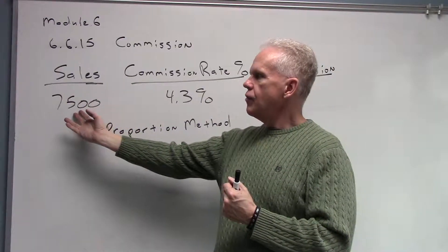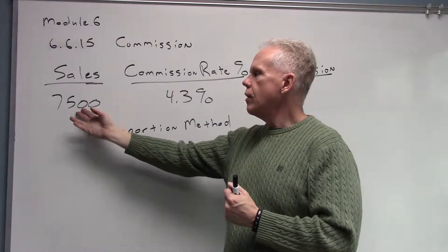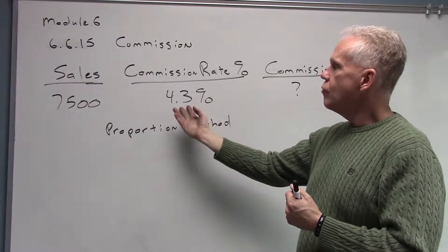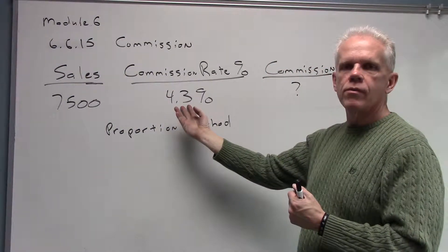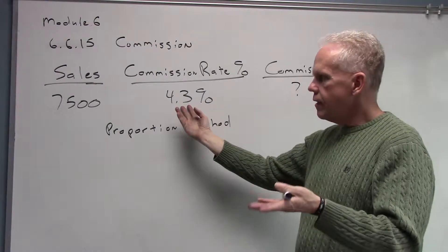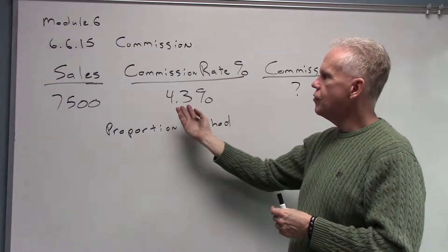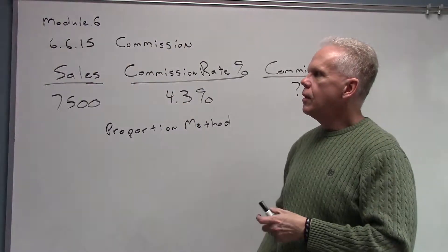In our information here, our salesperson has $7,500 in sales. Their commission rate or percent is 4.3%. Not a real high percentage, but this is their percentage of commission that they make on their sales.